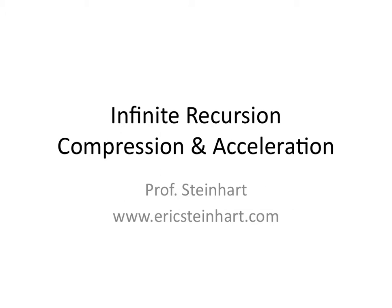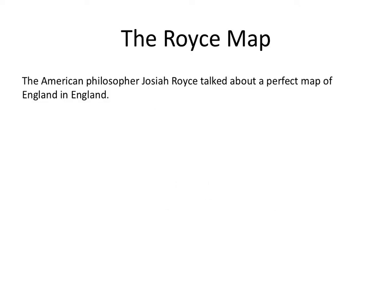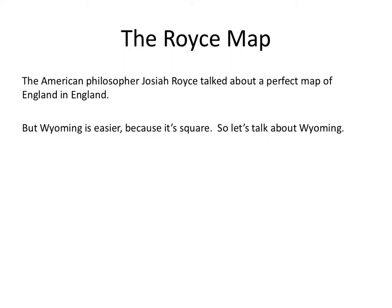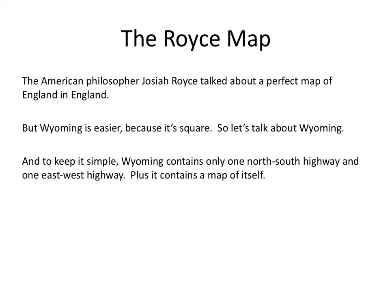Hello, this is Professor Eric Steinhardt, and we're going to talk about infinite recursion through compression and acceleration. Let's start with the Royce map. The American philosopher Josiah Royce talked about a perfect map of England in England. But Wyoming is easier because it's square, so let's talk about Wyoming.